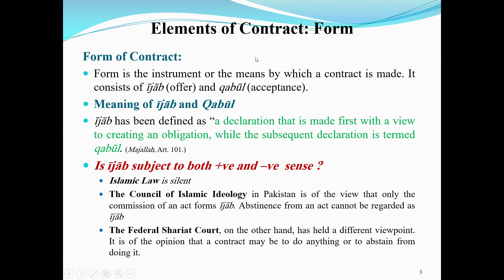The form of the contract — form is the instrument, the means by which a contract is made and concluded. It consists of Ijab (offer) and Qabul (acceptance), forming the contract. A contract is formed through offer and acceptance. So what is the meaning of Ijab and Qabul? When will we say that something is Ijab and the other party's response is Qabul?